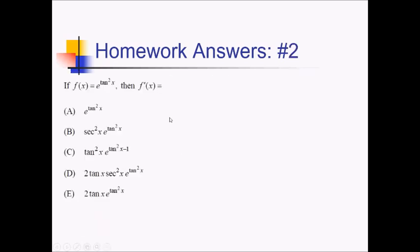For this problem, we're trying to take the derivative of e to the tan squared of x. We're going to have to use the chain rule. We start with the outer function, which is e to the something, so that derivative is going to be e to the tan squared of x.